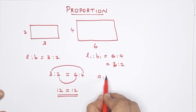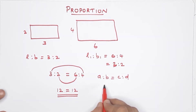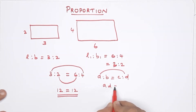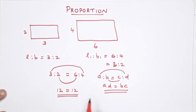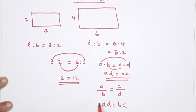We call it a ratio: a by b. That is equal to c by d. Then a by b equals c by d. We call it cross multiply: then a times d equals b times c. This is proportion.